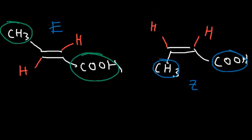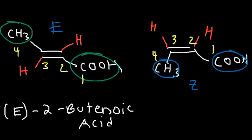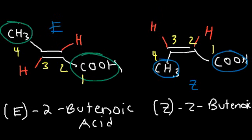What is the name of each of these compounds? Count the longest chain — we have four carbons, and the alkene is on carbon 2. So this is going to be called E-2-butenoic acid. The other one is the same thing, but instead of E, it's Z-2-butenoic acid.